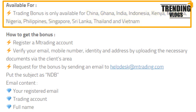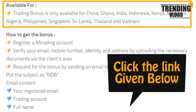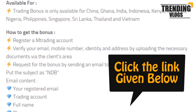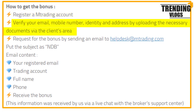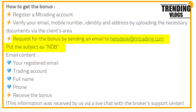If you are interested in getting bonuses other than mTrading, you can go from the link given below. To get this mTrading bonus, you have to first register with this broker, then verify your email, mobile number, identity, and address by uploading the necessary documents via the client's area. After that, you can send them an email requesting the bonus.